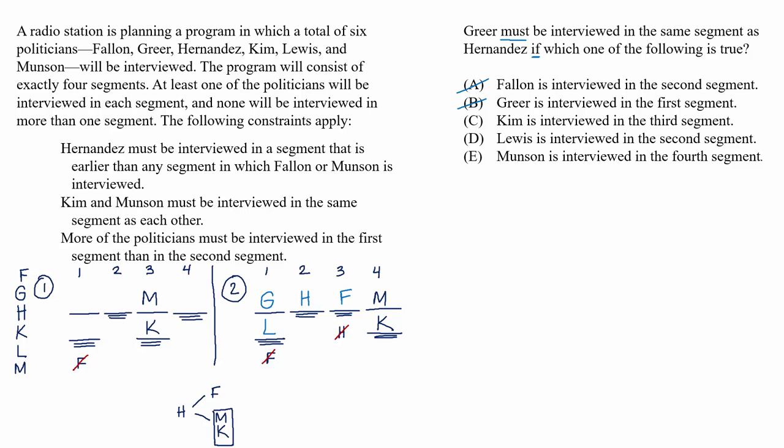C, Kim is interviewed in the third segment. This is wrong for the same reason that choice A was wrong. In scenario one, Kim already is interviewed in the third segment, and Greer could be alone in segment four. So this condition isn't sufficient for us to deduce that Greer and Hernandez are together.